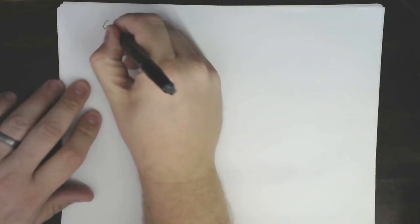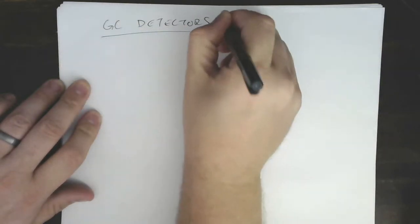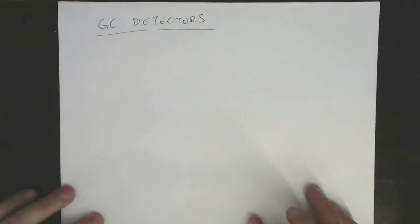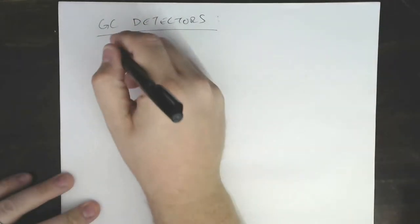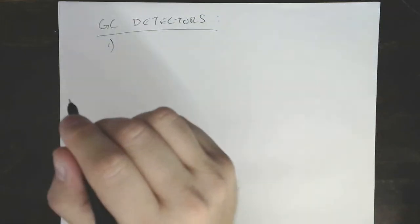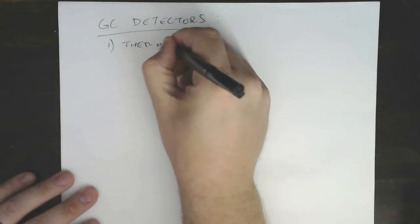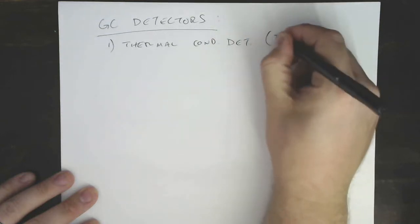What we're going to do today is talk about detectors in gas chromatography — GC detectors. We're going to talk about four categories of detector. It's not everything you'll ever see in detection in GC, but I think it covers most of the bases and will get you into the literature pretty quickly. The first one we're going to talk about is thermal conductivity detection, or TCD.